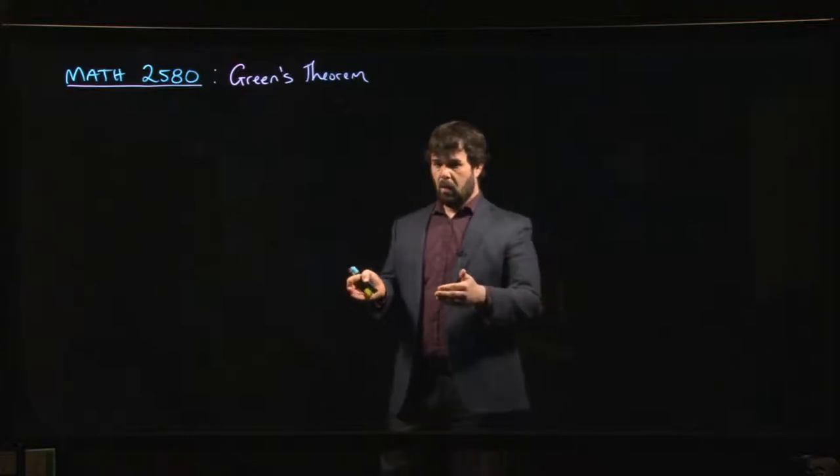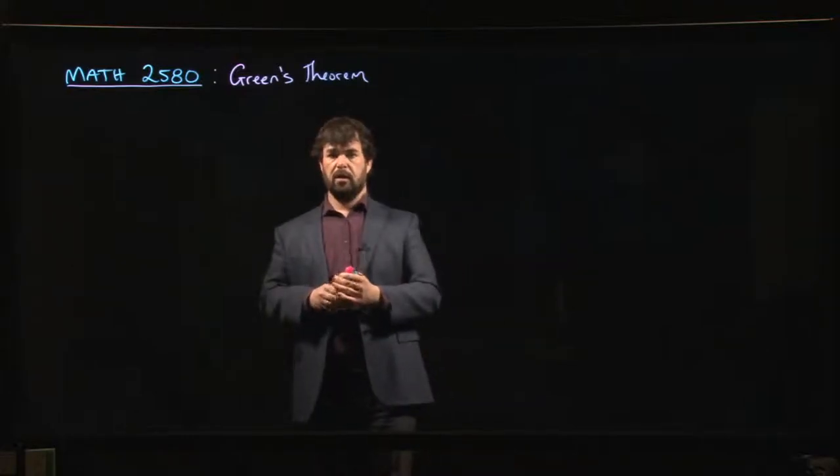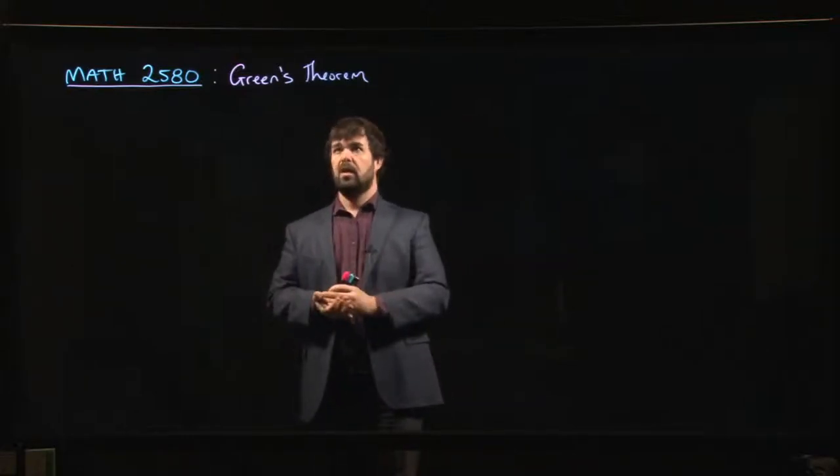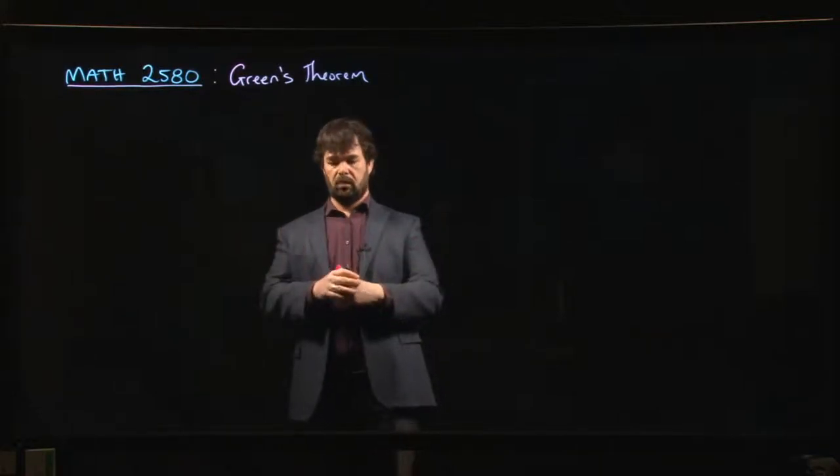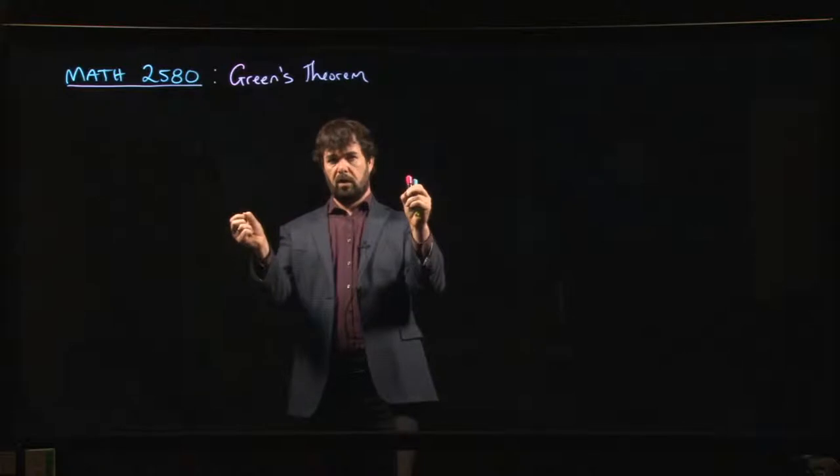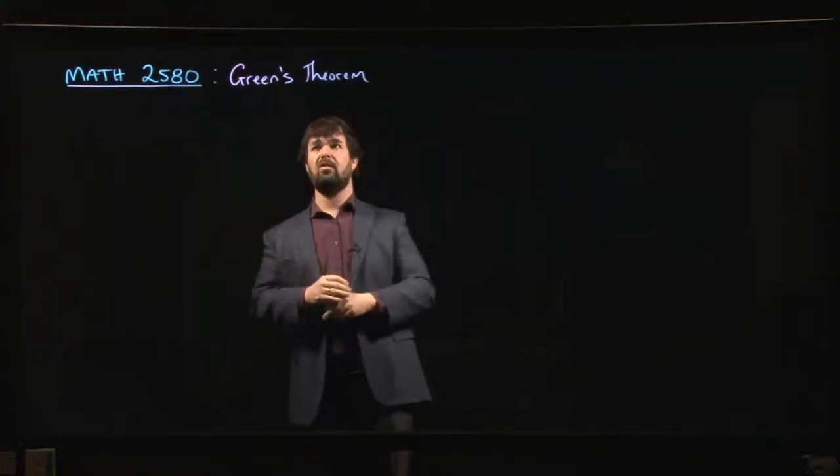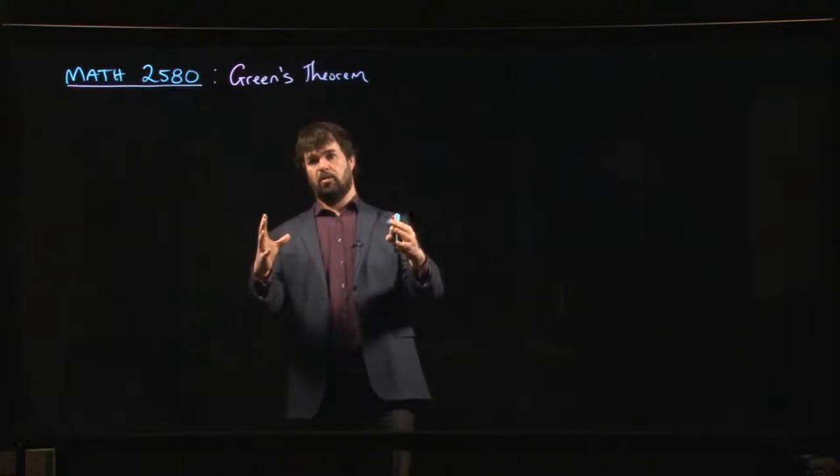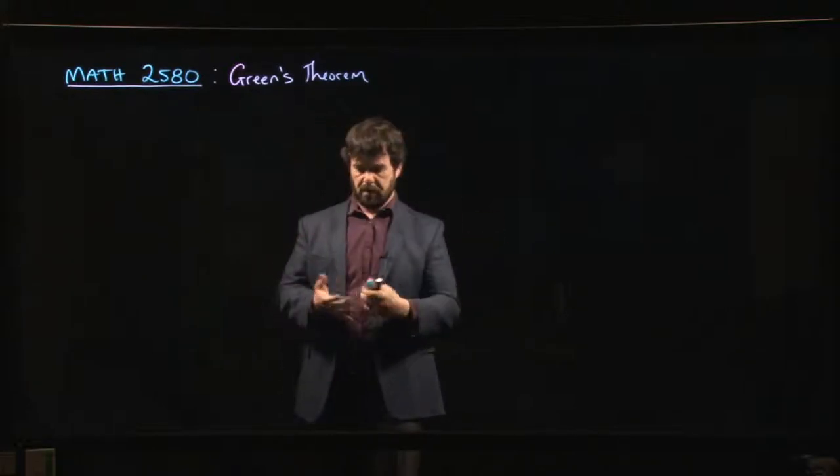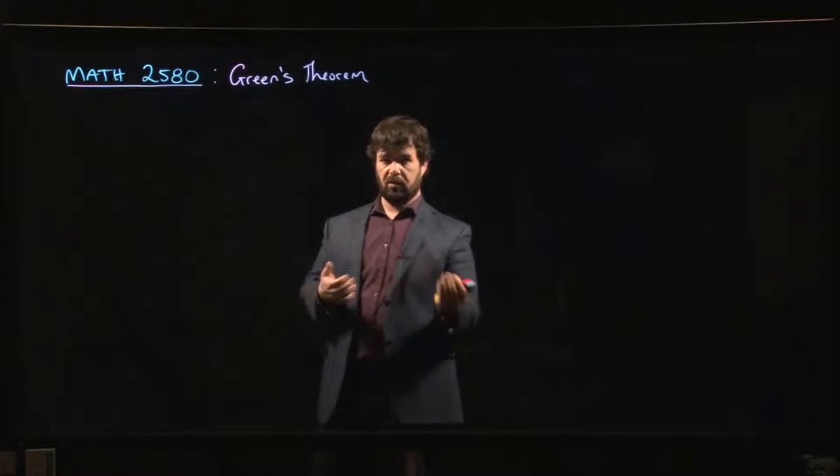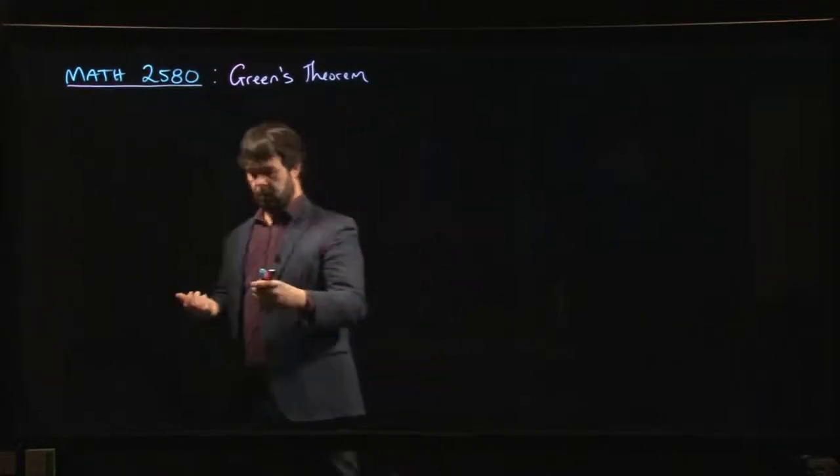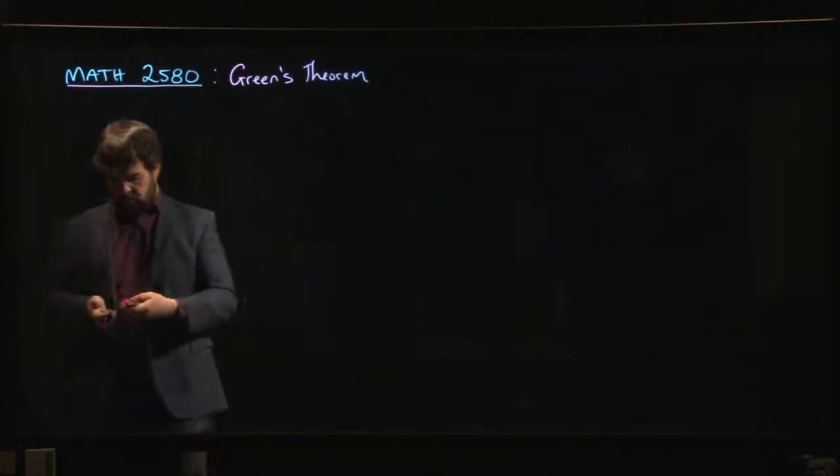In Green's theorem, we move up one dimension. Rather than integrating over a curve where the boundary consists of a couple of points, a couple of zero-dimensional objects, we integrate over a two-dimensional object whose boundary is then a one-dimensional object. Whenever you take the boundary, you go down by a dimension.